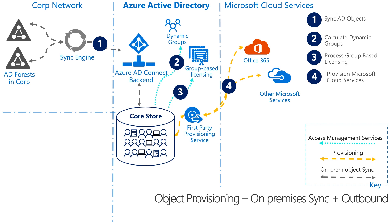Now the flow transitions to provisioning objects to the application, which is what we call outbound provisioning. In step four, the first-party provisioning service sends updates to various Microsoft cloud services to initiate application-specific provisioning activities, such as creating the mailbox in Exchange, or creating the SharePoint underlying repositories for OneDrive for Business.